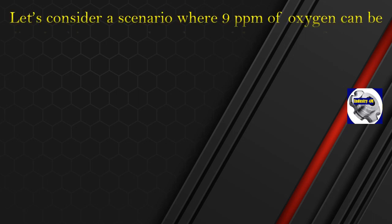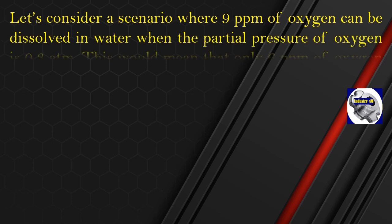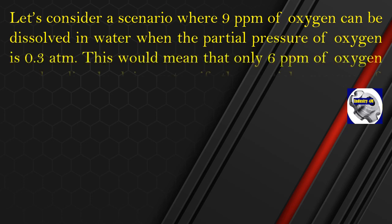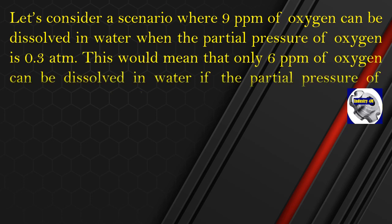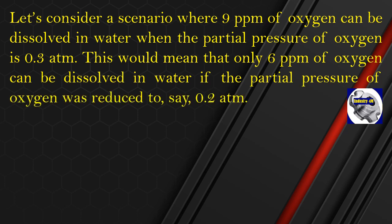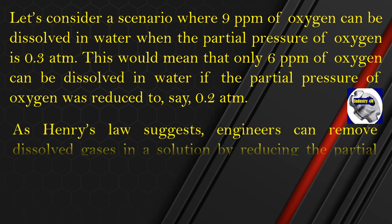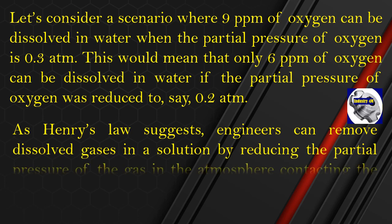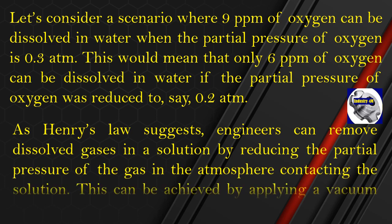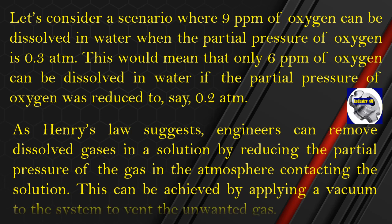Consider a scenario where 9 parts per million of oxygen can be dissolved in water when the partial pressure of oxygen is 0.3 atmospheres. This means that only 6 parts per million of oxygen can be dissolved if the partial pressure is reduced to 0.2 atmospheres. As Henry's Law suggests, engineers can remove dissolved gases in a solution by reducing the partial pressure of the gas in the atmosphere contacting the solution. This can be achieved by applying a vacuum to the system to vent the unwanted gas.